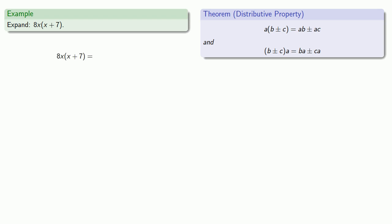So each of these sum ends, x and 7, is going to be multiplied by 8x. Now I can do a little bit of work with these expressions. 8x times x, because there's two factors of x, I can write this as 8x squared.